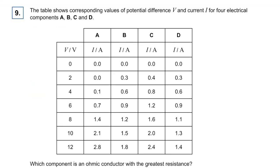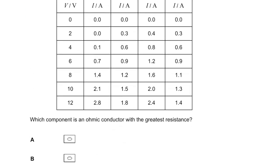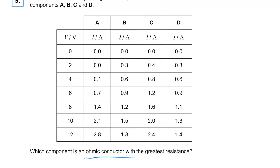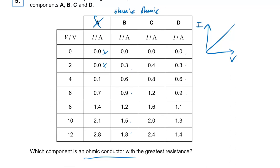Question nine: which component is an ohmic conductor? We want a straight line on an IV graph. Component A stays at zero, so it's not ohmic. Component B goes up by 0.3 every time — constant gradient, constant resistance, so that is ohmic. Component C also goes up by 0.4 each time, so also ohmic. Component D is non-ohmic. The greatest resistance is B, as it has the lowest current at the same PD.